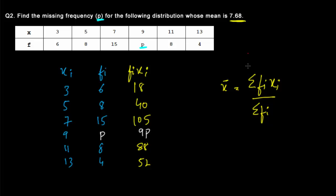Now we have to find out the summation of fi xi which is addition. So we simply add the entire fi xi column and that gives us 303 plus 9p. We also need the summation of fi in the denominator. Therefore we add the entire fi column and that's 41 plus p.